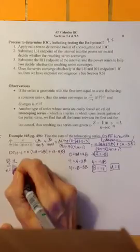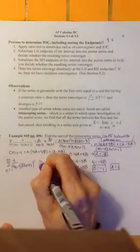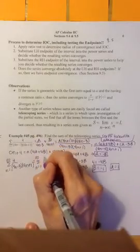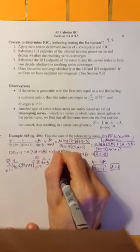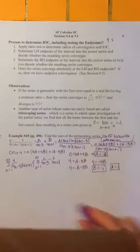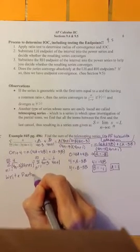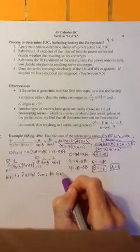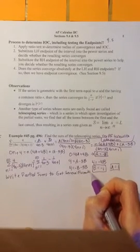So the whole task here was to rewrite our original series in the partial fraction format. So this can now be written as the sum from n equals 1 to infinity 1 over 4n minus 3 minus 1 over 4n plus 1. Now what I'm going to do is I'm going to start writing out partial sums to get a general formula so then we can take the limit.